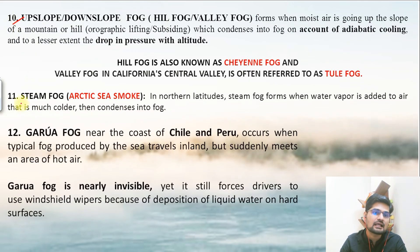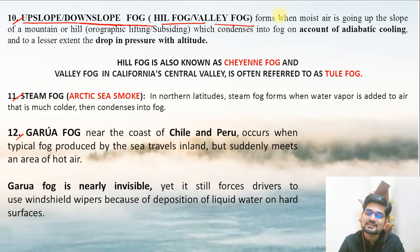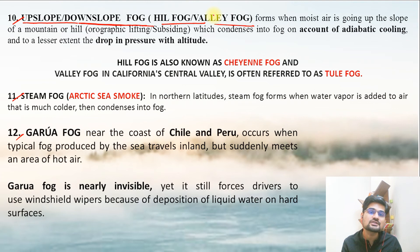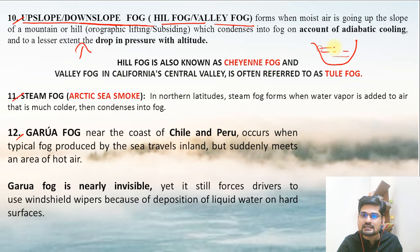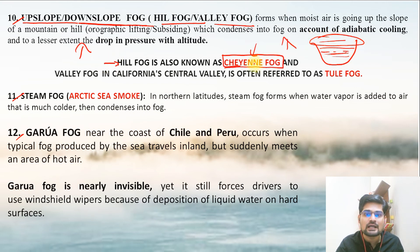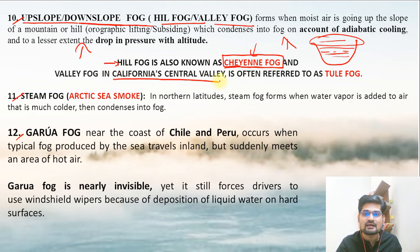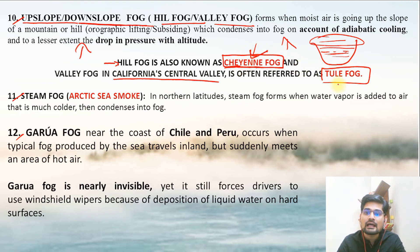Upslope or downslope fog is also called hill fog or valley fog. Remember sea breeze and land breeze situations near coastal areas (like San Francisco fog), and temperature changes with altitude — the valley fog. Temperature inversion means the valley floor and the slopes have different temperatures, which leads to fog formation. In winters, valleys are covered with a thick layer of fog while the upper layer is clear. Hill fog is also known as Cheyenne fog, and the valley fog in California's Central Valley is often known as Tule fog.